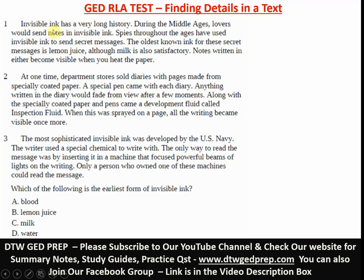Let's get started. Before you get into a text, instead of just reading through, go to the question first. It says here: which of the following is the earliest form of invisible ink? The options are blood, lemon juice, milk, and water.